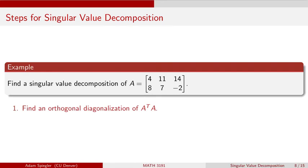Welcome everybody. In this video, we're going to work through an example of how we can perform a singular value decomposition for matrix A, which is a 2 by 3 matrix. Matrix A has first column 4, 8, second column 11, 7, and third column 14, minus 2. I'm going to go through this process and then summarize the steps at the end.